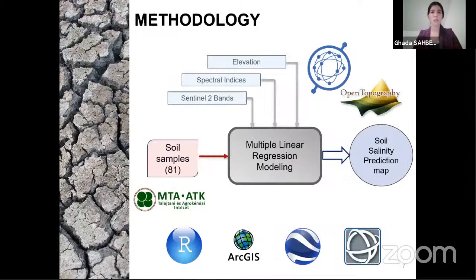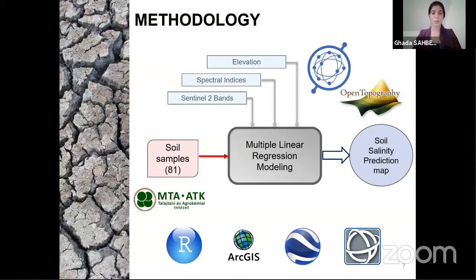The simplified methodology: 81 soil samples were provided by the research institute. Sentinel-2 data was downloaded from the Copernicus Open Access Hub, and a 30-meter SRTM model was used to retrieve elevation values as an additional independent variable. After downloading, data was preprocessed with atmospheric correction in ENVI IDL. Spectral indices were then calculated, and a database was created combining field measurements and remotely sensed data in R Studio, where the soil salinity prediction model was built.